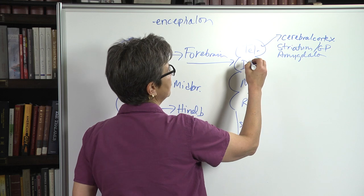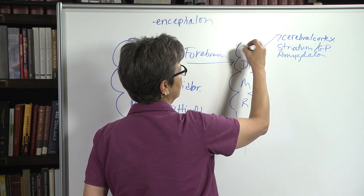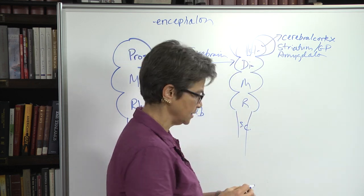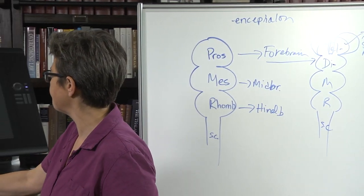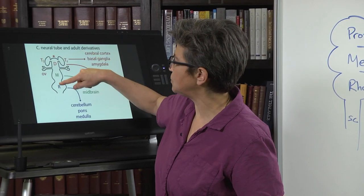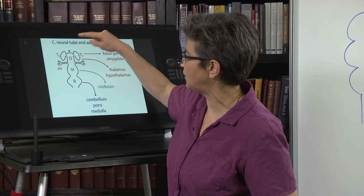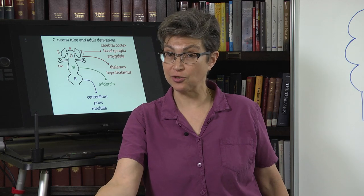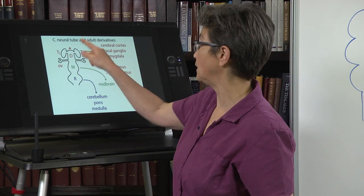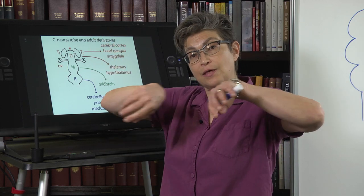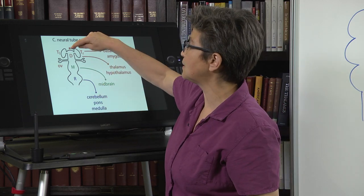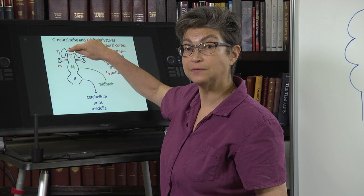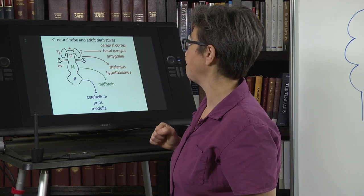When this telencephalon divides, it immediately invaginates and produces this. Let's go back to the slides where we can see that. You have rhombencephalon, mesencephalon, diencephalon, and now two telencephalic hemispheres. There's one telencephalic vesicle that divides into left and right hemispheres. The place where they join is off to the side, so the lamina terminalis is the front end here of the diencephalon—that's now the front end of the neural tube on the midline.